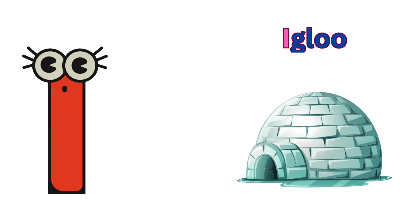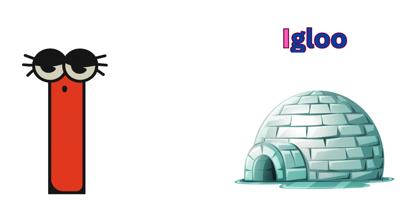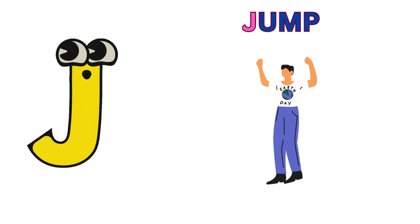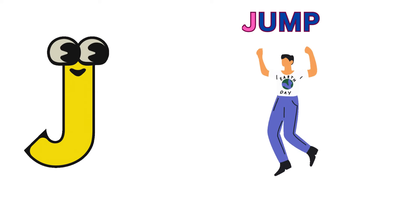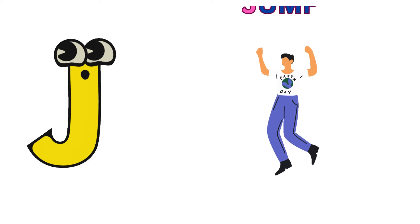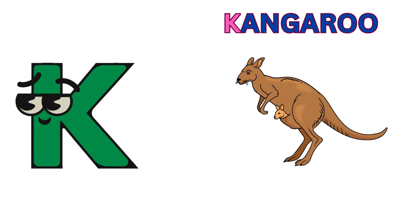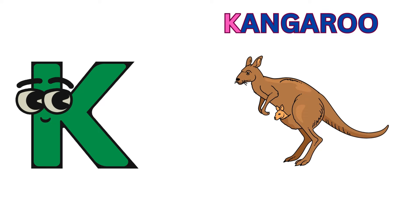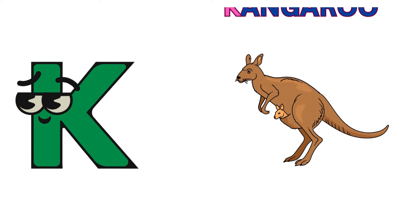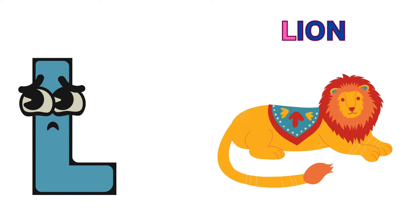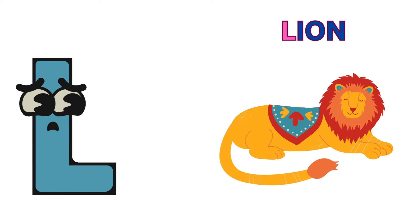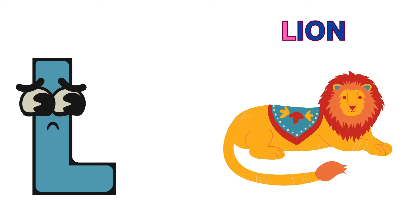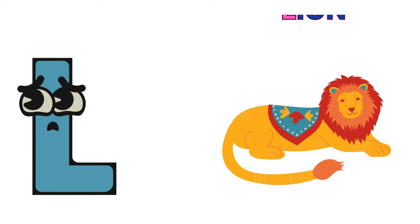I is for igloo, i-i-igloo. J is for jump, j-j-jump. K is for kangaroo, k-k-kangaroo. L is for lion, l-l-lion.